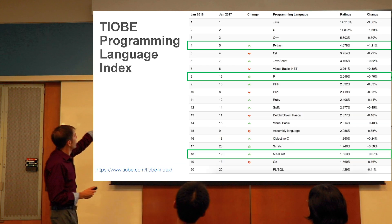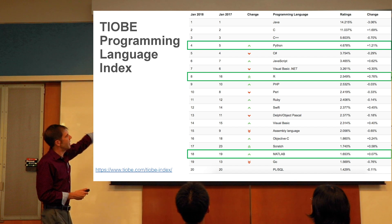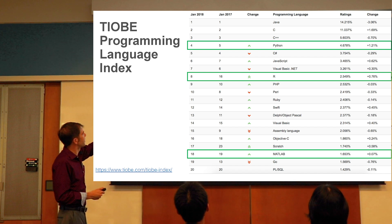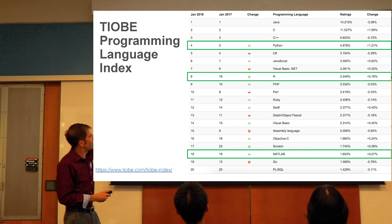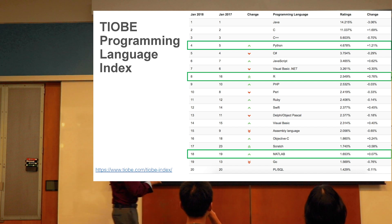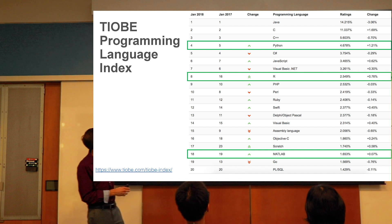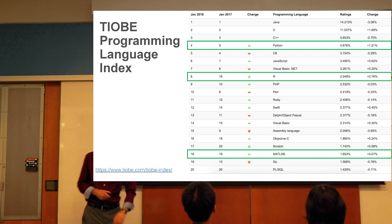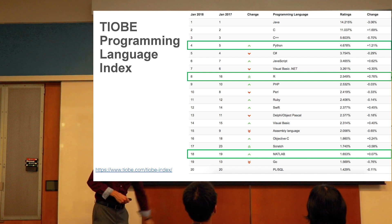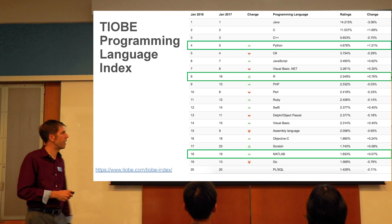This is a regularly updated programming language index, and the rating level shows the relative popularity according to their methodology, with Python, R, and MatLab all being pretty high up on a very long list.